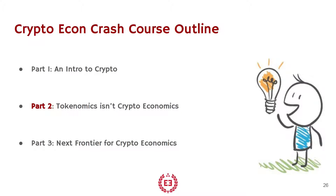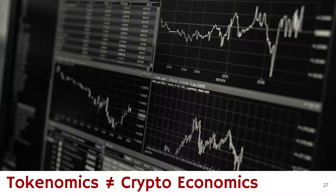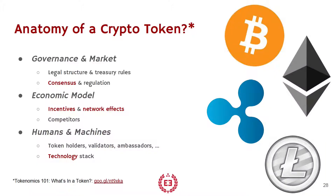If you already understand basically what goes into every token — like governance and economic models — then you might be able to skip ahead right to Part 3, where we will talk about the next frontier in crypto economics. This part is focused on why tokenomics is not the same thing as crypto economics. Part 1 explained everything related to a crypto, but it really didn't get into the details of how they function on the back end, and that's where we're going to start in this part.